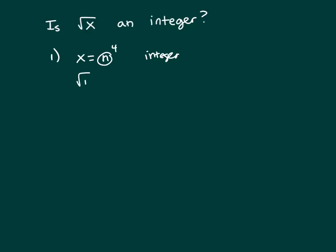So when you take the square root of an integer, if you take the square root of n to the 4th, because that's another name for x, this will be n squared, because it's a square root, and 2 will go into 4 two times.